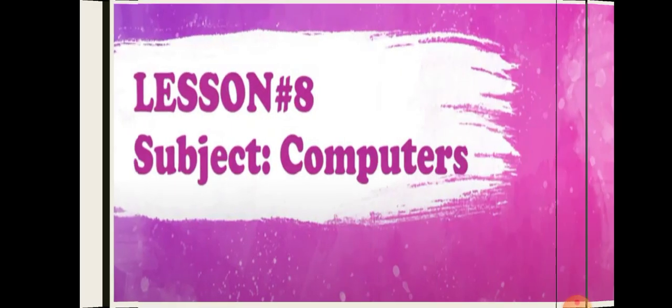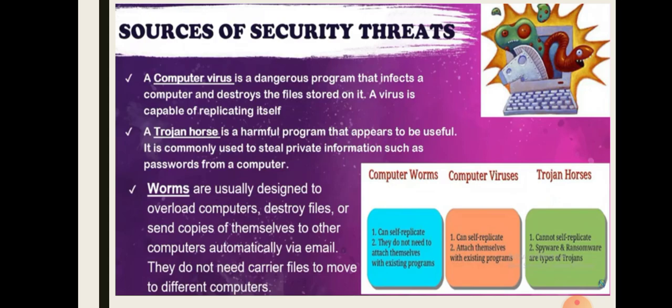The first one is the computer virus. A computer virus is a dangerous program that infects our computer and destroys the files stored on it. A virus is capable of replicating itself — it replicates by itself, like a cancer disease, spreading uncontrollably. Computer viruses are one of the biggest threats to data security.